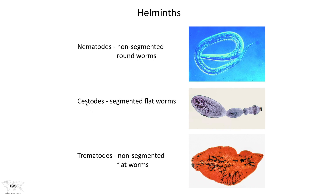Then there are the cestodes. Cestodes are segmented and they're flat, and we commonly call these tapeworms. And finally, we have the trematodes. The trematodes are a mix between non-segmented and flat — they're non-segmented and flat — and they're very complicated in their lifestyles, as we will see as we get to them.